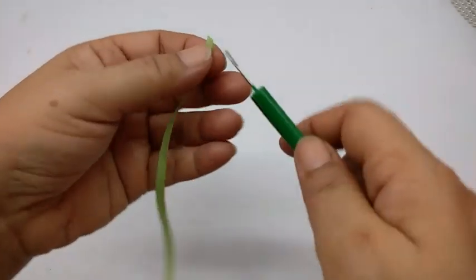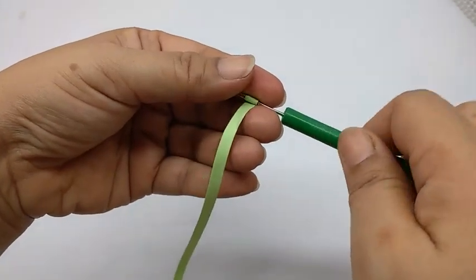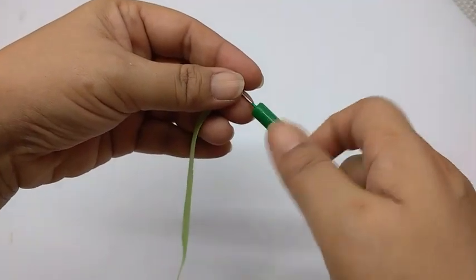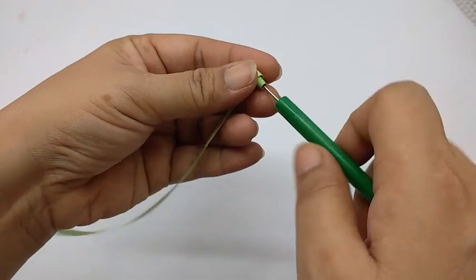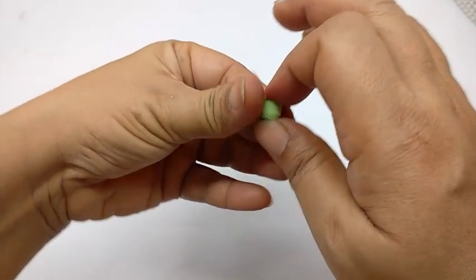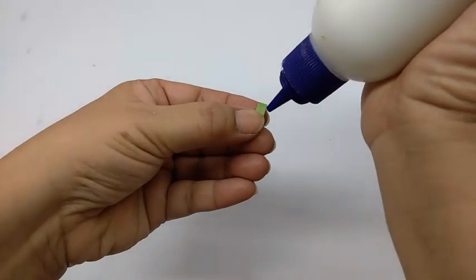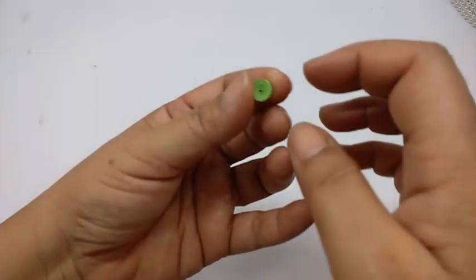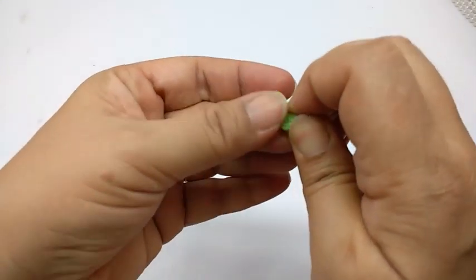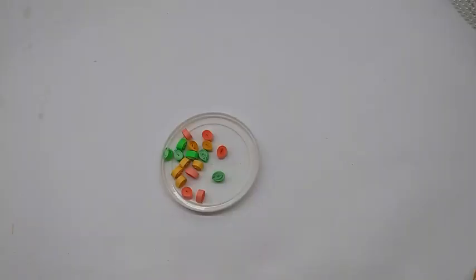So first I'll just quill the strip. You can take any color that you like. It comes like this. Just apply some glue and stick it, and then just press it on one side so you get a teardrop shape like this.